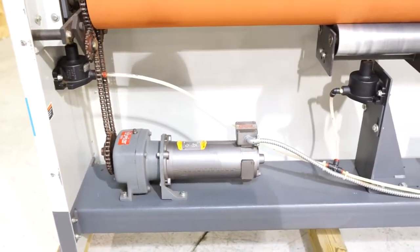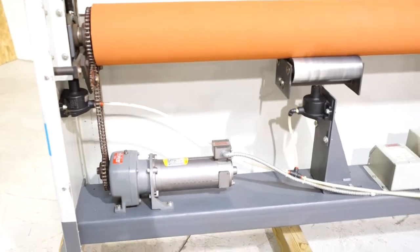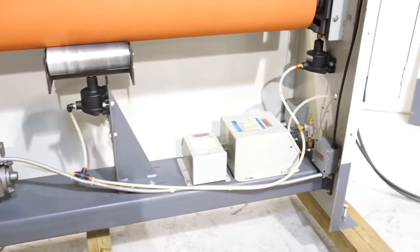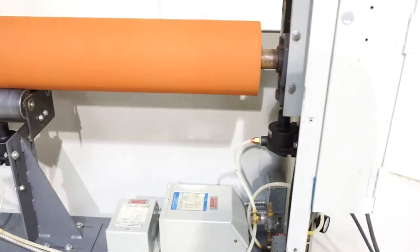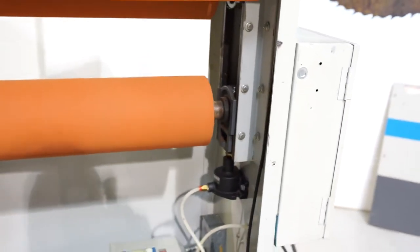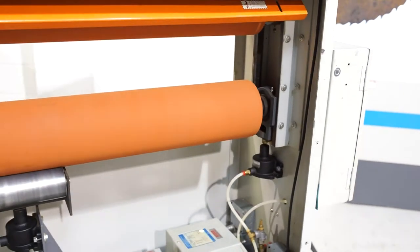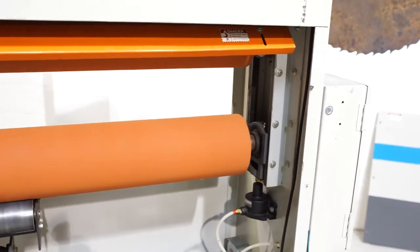It is powered by a 1/2 horsepower Baldor motor that does feature variable speed. On the bottom, you're going to find that the lower roll will raise to the top roll, and the top roll is the one that you would adjust for height.